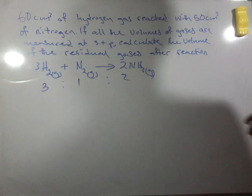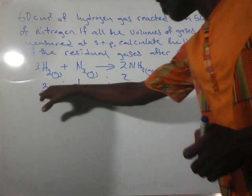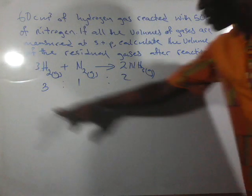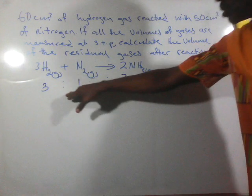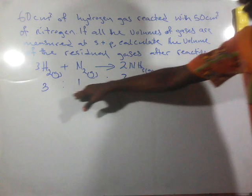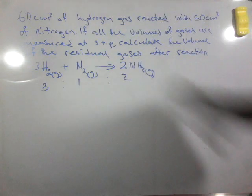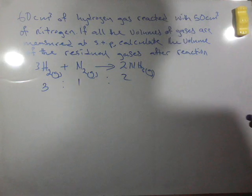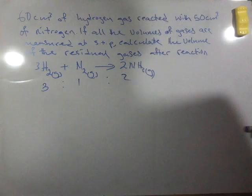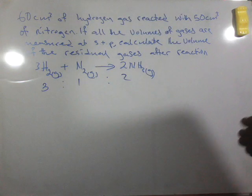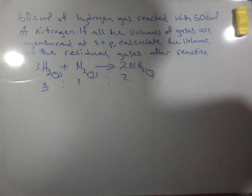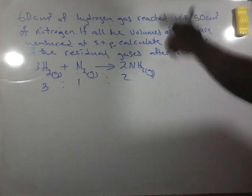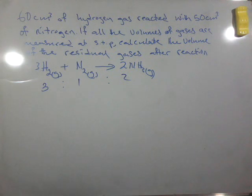According to Gay-Lussac's law, it means that they react based on this simple ratio that they have. The volume of combination will also maintain this ratio. So since we have 60 cm³ of hydrogen gas and 50 cm³ of nitrogen, let's find out the volume of nitrogen that will react with hydrogen.